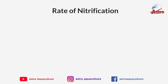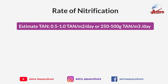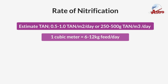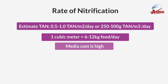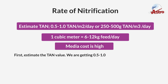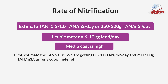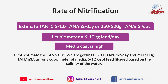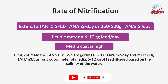Rate of nitrification estimates: TAN 0.5 to 1.0 grams per meter square per day, and 250 to 500 grams TAN per meter cubic per day. One cubic meter of media equals 6 to 12 kilograms of feed per day. Media cost is high. First, estimate the TAN value — 0.5 to 1.0 grams per meter square per day, and 250 to 500 grams TAN per meter cubic per day.